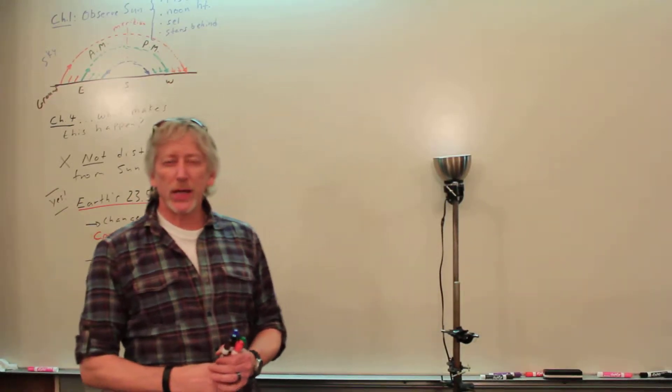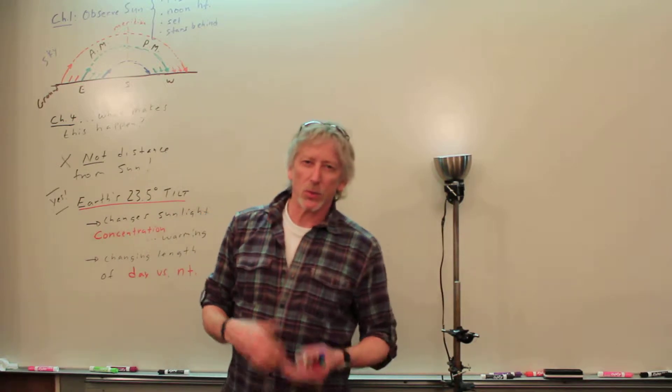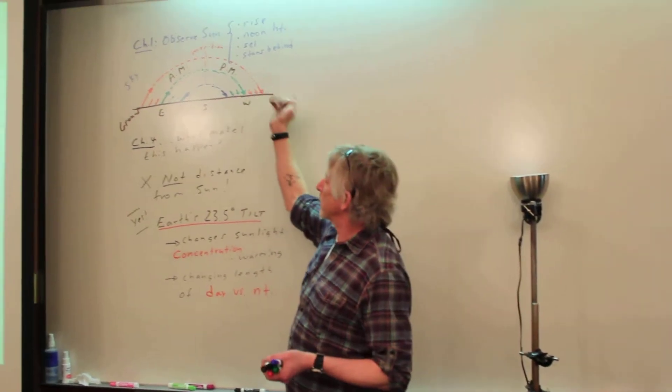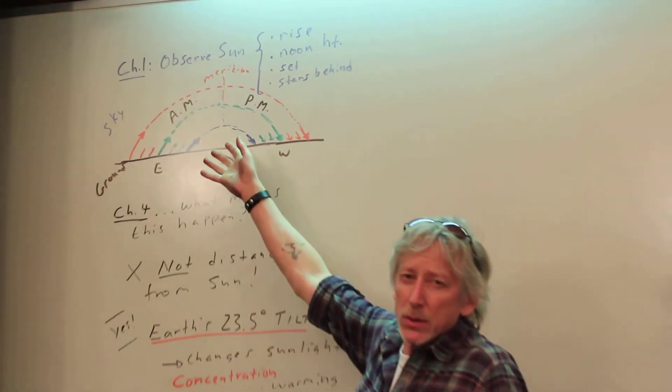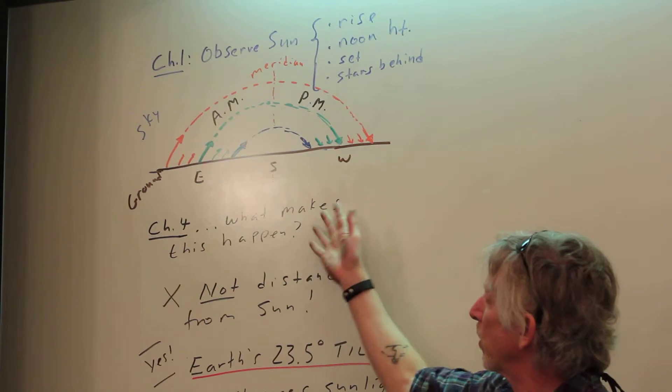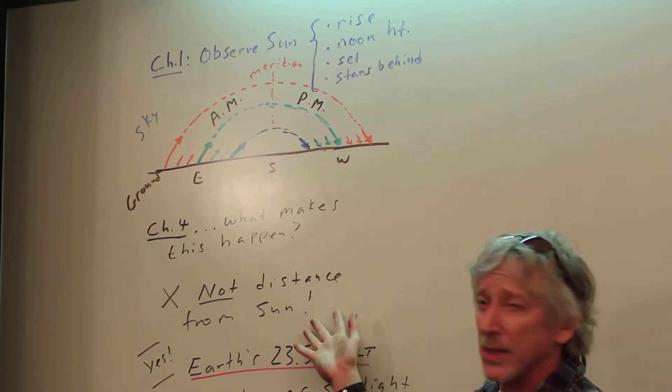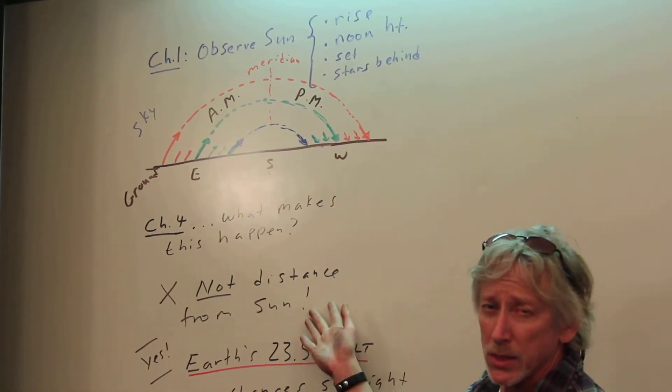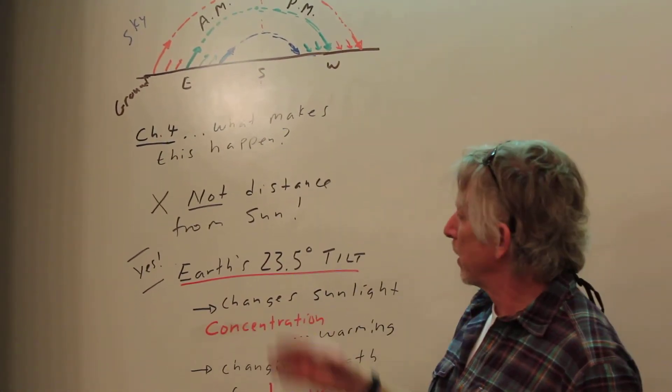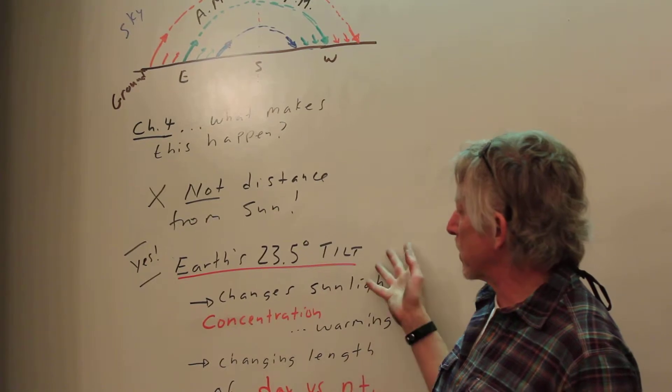Okay, let's continue finding out why we have seasons. What's going on that gives us those seasons? So we've observed in chapter one the path of sun, where it rises, where it sets on our horizons. And we said it's not the distance. It's not that we're closer to sun in summer. In fact, in the northern hemisphere, we're farther from sun. That doesn't vary that much. It's the tilt.